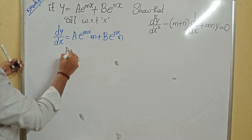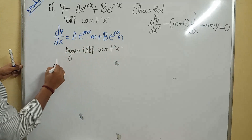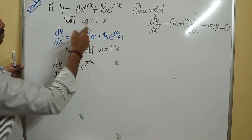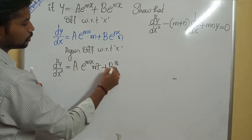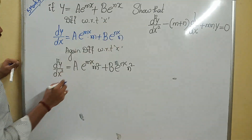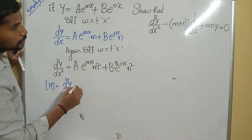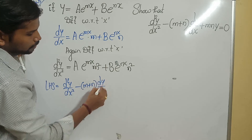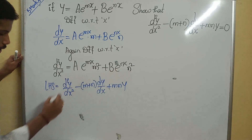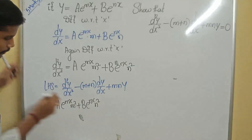Differentiating again with respect to x: d²y/dx² = a·e^(mx)·m² + b·e^(nx)·n². Now consider the LHS: d²y/dx² − (m+n)·dy/dx + mn·y. Substituting d²y/dx²: we write a·e^(mx)·m² + b·e^(nx)·n².